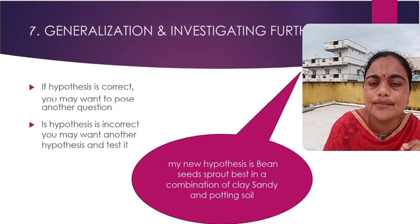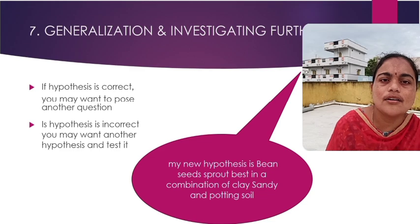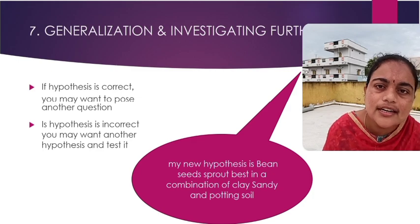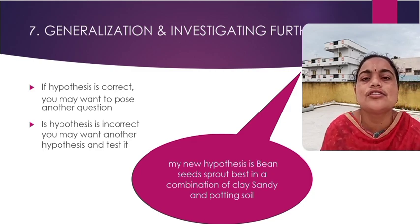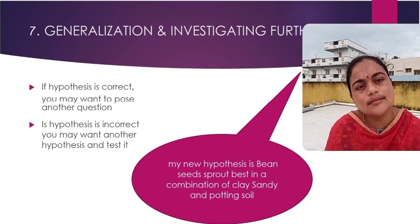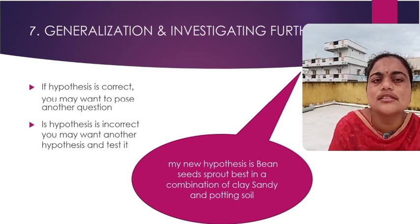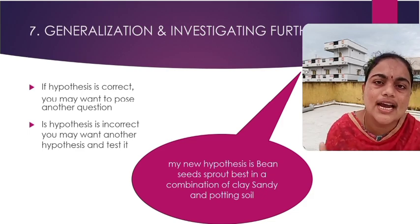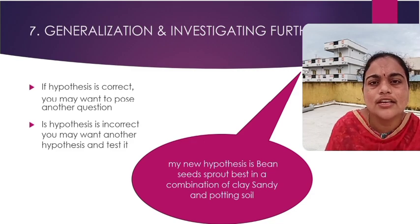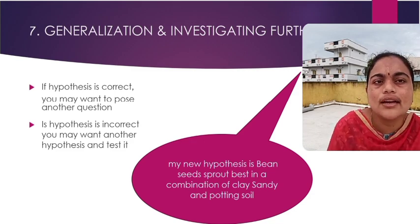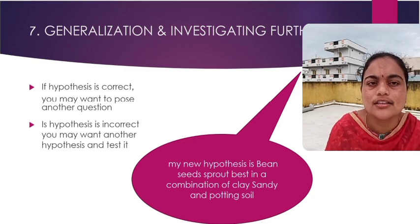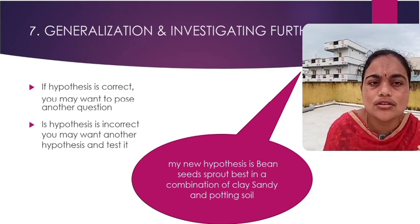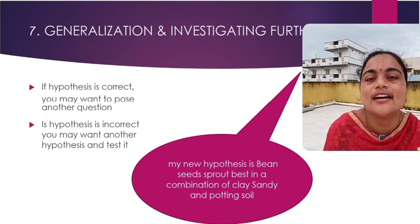If the hypothesis is correct, we go on to another question and solve it. If the hypothesis is incorrect, we go back and test it further. Here the hypothesis is not correct — it is also growing best in sandy soil. So we generalize and investigate further. My new hypothesis is that bean seeds sprout best in a combination of clay, sandy, and potting soil.